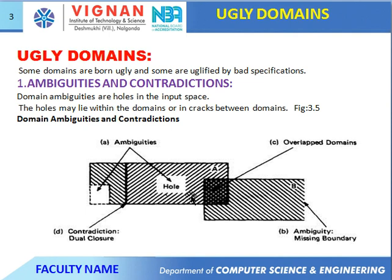The overlapping domains — A and B with zigzag overlap — represent contradiction. These are the two holes, called ambiguity, with missing boundaries. Two holes represent ambiguities, and overlapping domains represent the contradiction — dual closure where two domains A overlap with another A — these are the union.